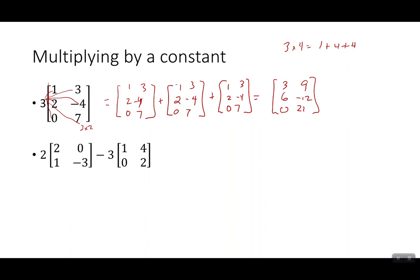And then we can also combine those. So you can combine a multiplication and an addition sort of thing. Just follow the order of operations. Again, we do the multiplication before we do subtraction. So if I've got 2 times this 2 by 2 matrix minus 3 times a different 2 by 2 matrix, I'm going to do the multiplication first.